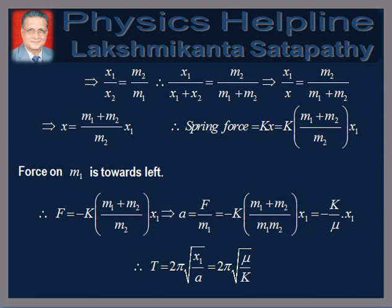The force on mass M1 is towards the left, therefore we write F = −k·(M1 + M2)/M2 · X1. This implies the acceleration A = F/M1 = −k·(M1 + M2)/(M1·M2) · X1. Putting μ = M1·M2/(M1 + M2), we get A = −k/μ · X1. We observe that the acceleration is proportional to displacement and directed towards the mean position, hence the oscillation is simple harmonic, whose time period is T = 2π√(X1/|A|) = 2π√(μ/k).